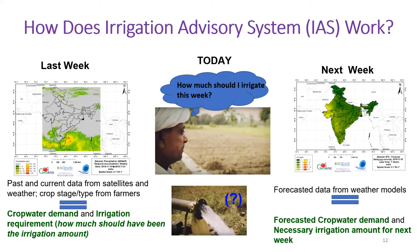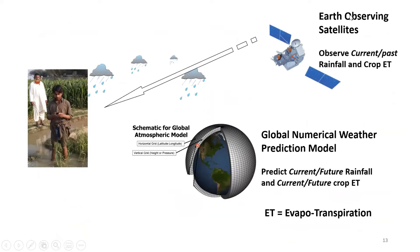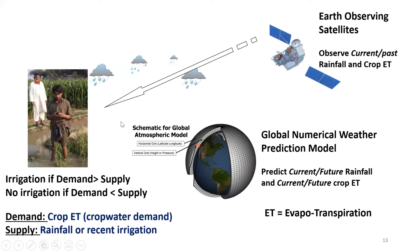To summarize the workflow: satellite data provides current or past rainfall and weather parameters, which are combined with global numerical weather prediction models to calculate crop water demand. If demand is greater than supply — where supply is rainfall or recent irrigation — farmers receive a text message recommending irrigation. If demand is less than supply, no irrigation is needed. That is how the IAS service works.